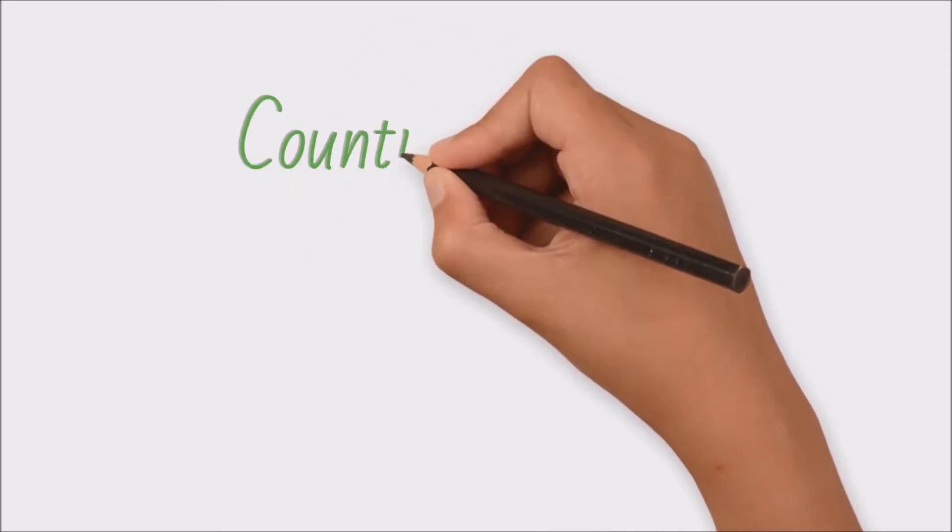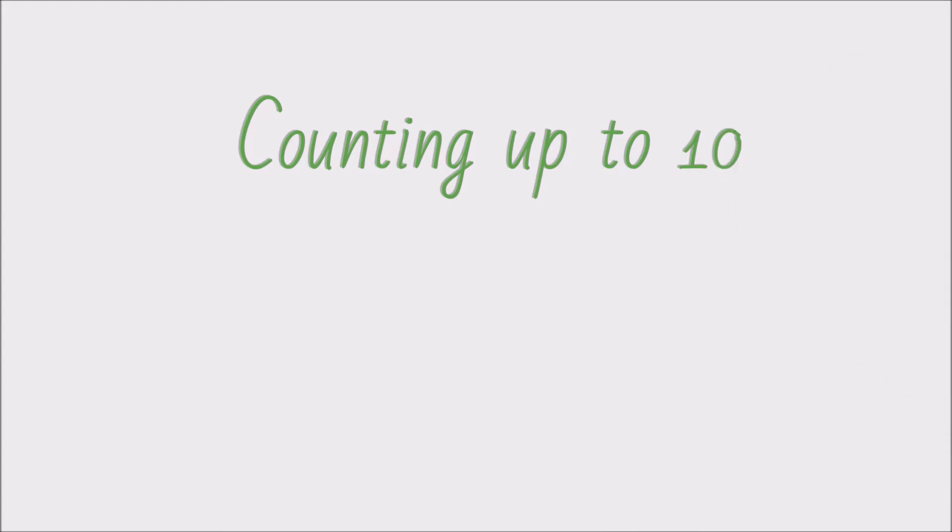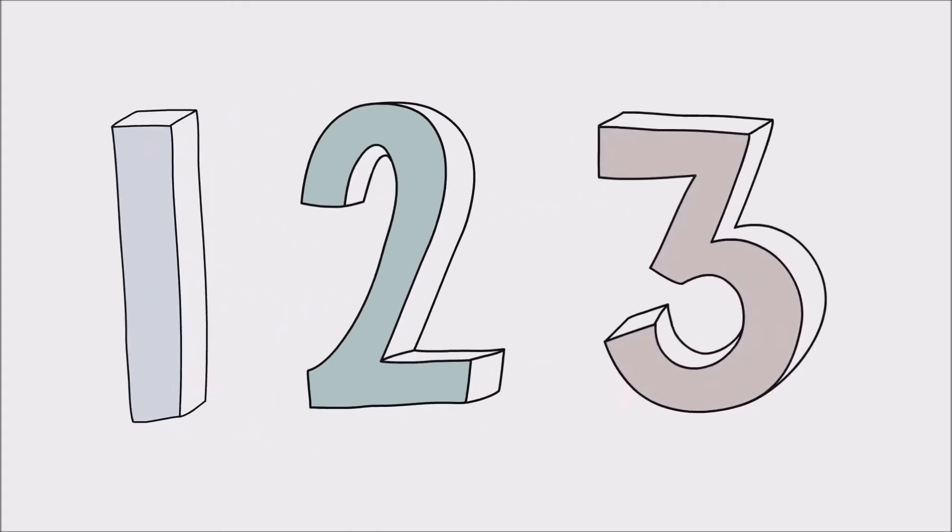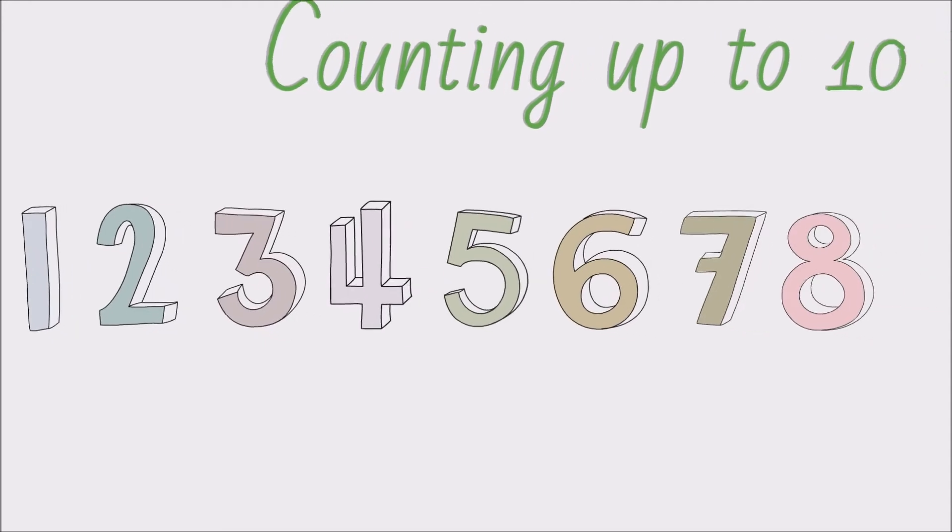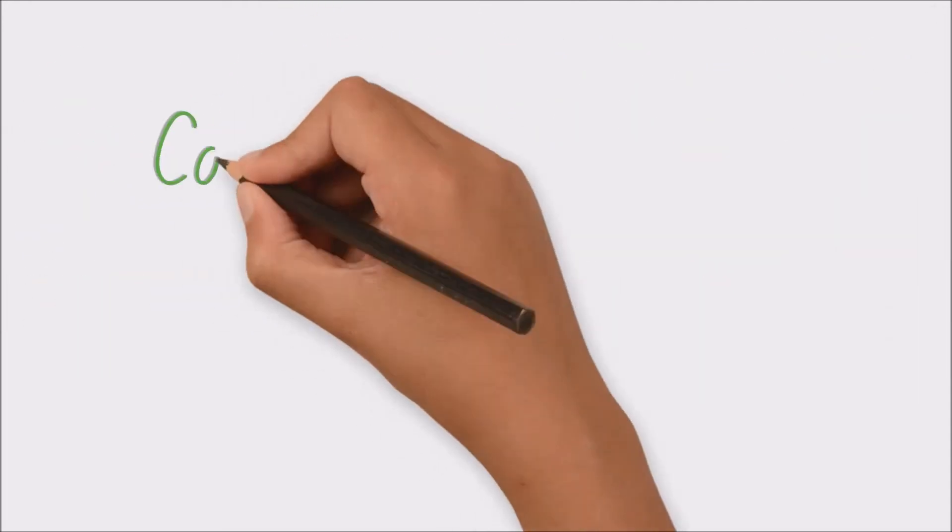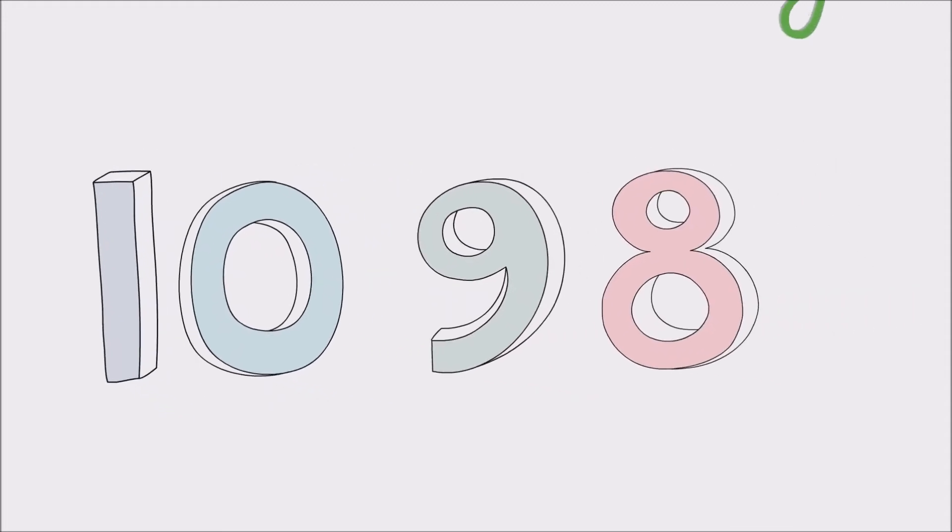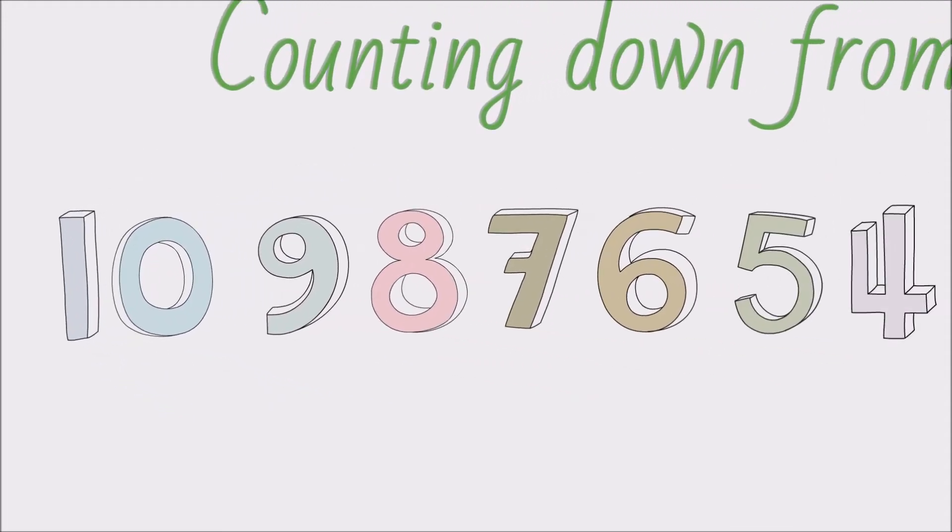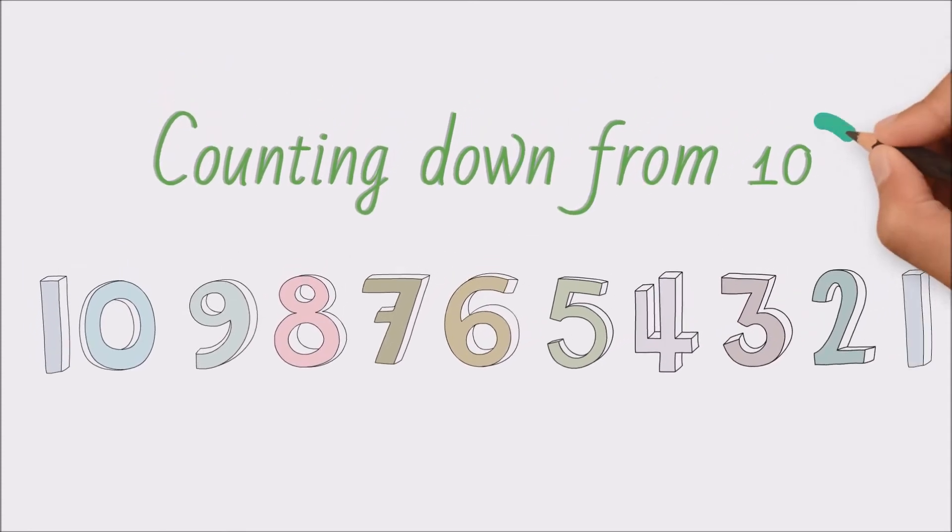So let's start off by checking off all the skills we need to learn this topic. First, let's count from one to ten: one, two, three, four, five, six, seven, eight, nine, ten. Now let's try counting backwards from ten like a countdown: ten, nine, eight, seven, six, five, four, three, two, one.